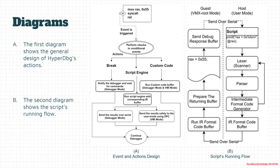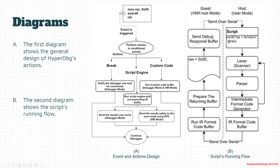HyperDbg's script engine runs in two different modes. The first is when you pause the debugger and run a script on a single core — for example, using a print function to show a register value like RAX. It goes through the lexer and parser, converts to an intermediate representation, sends that IR code buffer over serial or TCP to the target debuggee, which evaluates and runs the script, then sends results safely back to the host debugger.